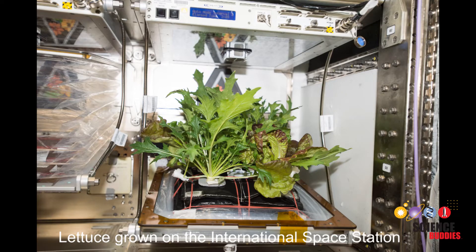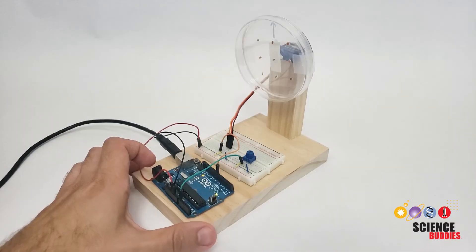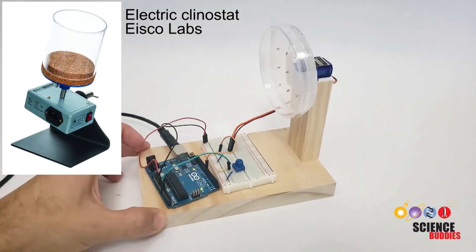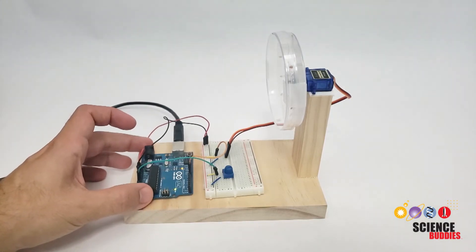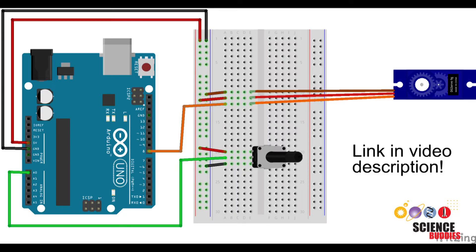Doing these experiments on Earth is much cheaper than launching plants into space to do the experiments. And while you could buy a laboratory-grade Clinistat to do this experiment yourself, you can build your own much cheaper Clinistat using an Arduino. You can find a complete parts list, circuit diagram, and example code linked in the description of this video.